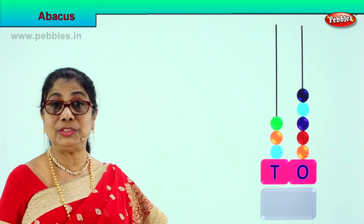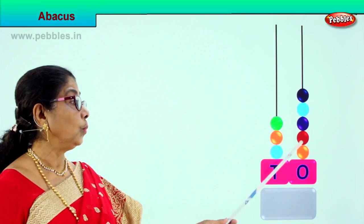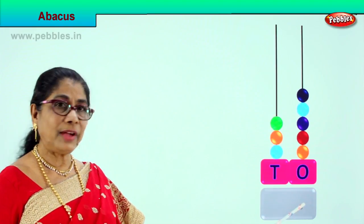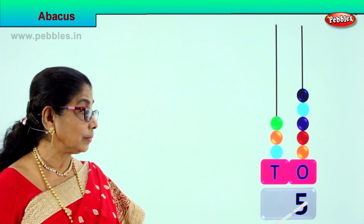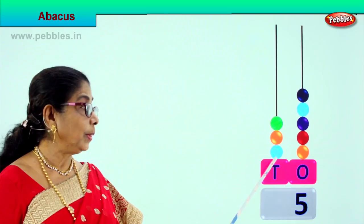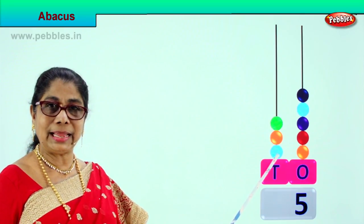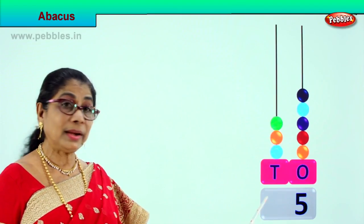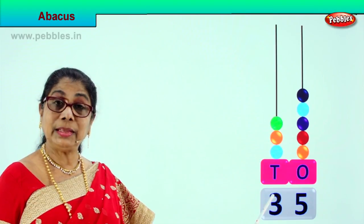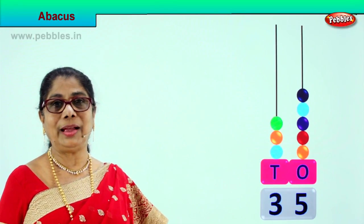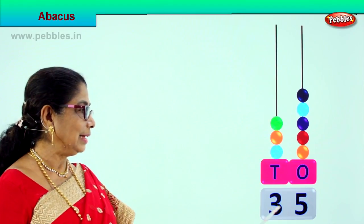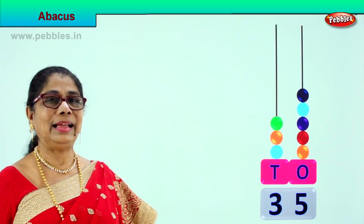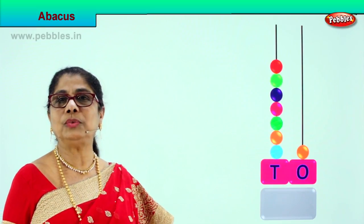Let's count as usual — the ones place: 1, 2, 3, 4, 5. There are five beads, so we write five here — five ones. Now we go to the tens place. Each bead is ten. Count in tens: 10, 20, 30 — one ten, two tens, three tens. We write three down here, that is thirty. Three tens and five ones: thirty-five. Did you enjoy? Let's take another abacus to help us count and learn.